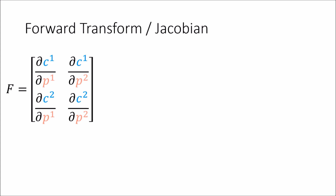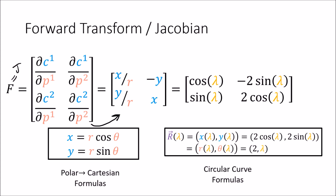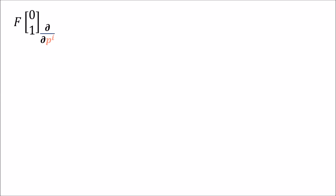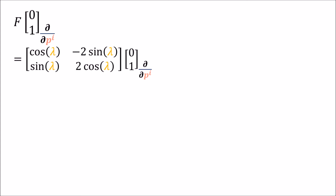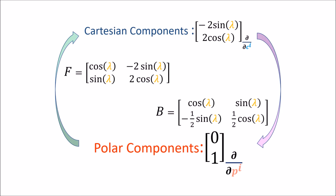We can also confirm things work in the other direction using the forward transform — the ordinary Jacobian — which has partial derivatives with C on top and P on the bottom. Using the polar-to-Cartesian formulas we compute the derivatives and evaluate them on the circular curve parameterization to get the forward matrix F. Substituting this matrix, since we have 0 and 1 as the polar components, we essentially take the second column of the matrix and get the expected Cartesian components. So the backward matrix (inverse Jacobian) takes us from Cartesian to polar components, and the forward matrix (Jacobian) takes us from polar to Cartesian components.